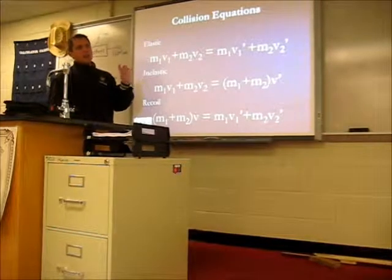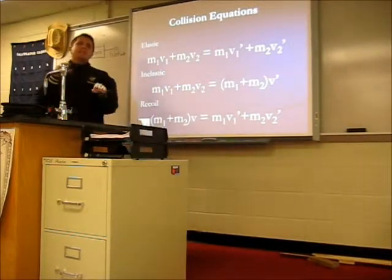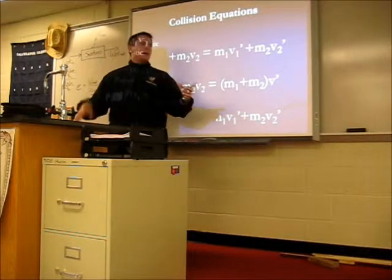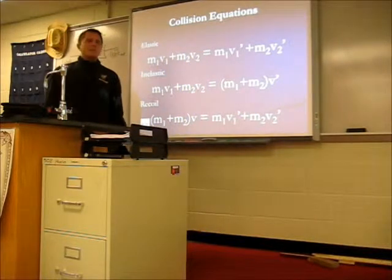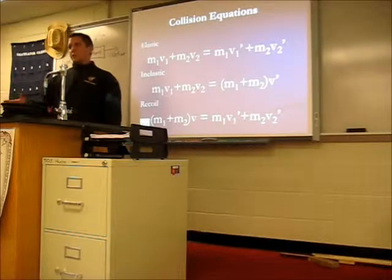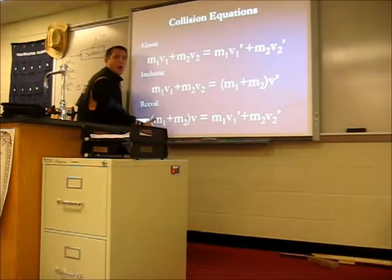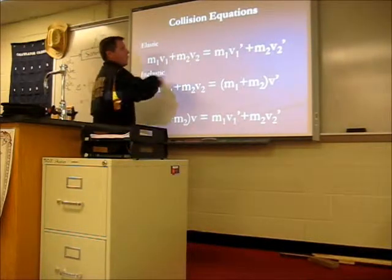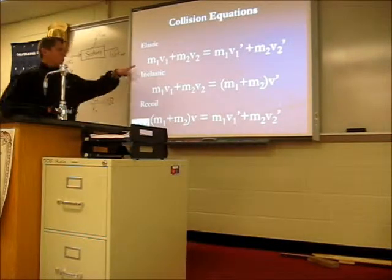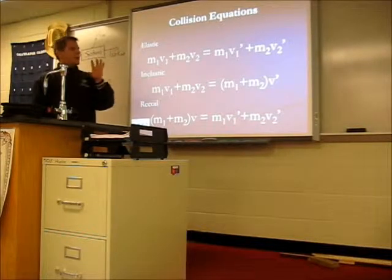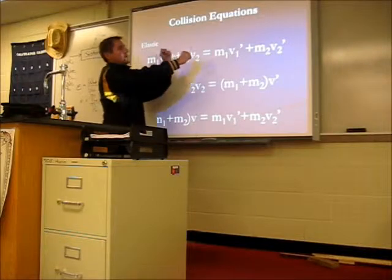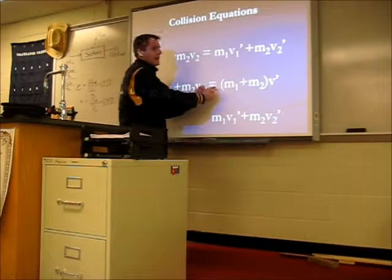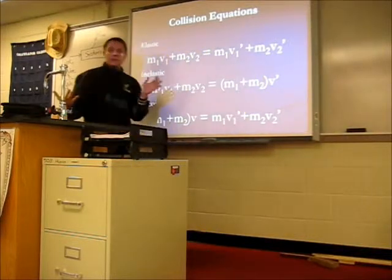You can look at these equations like pictures. The left-hand side is always before; the right-hand side is always after. For elastic: two separate objects before, two separate objects after. For inelastic: two separate objects before, but they're stuck together after — shown by the parentheses. If two things are stuck together, they must have the same velocity, so you can factor it out mathematically.